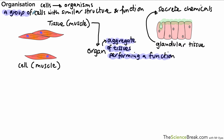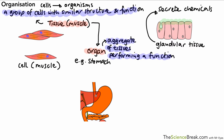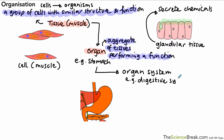One example of an organ, sticking with the digestive system, could be the stomach — shown here in that orangey color. The stomach is part of an organ system, and if we get lots of different organs working together we make an organ system. In this example, that organ system would be the digestive system.